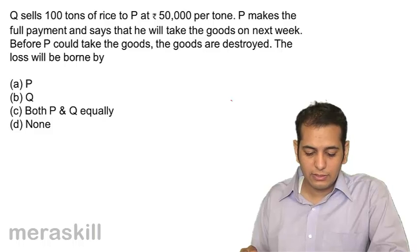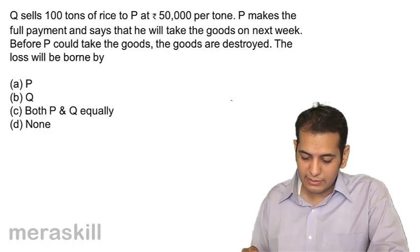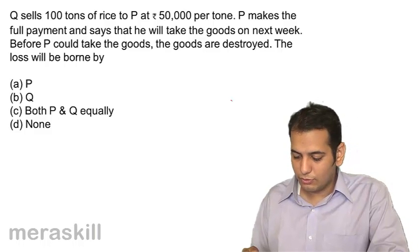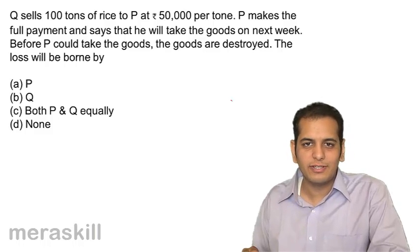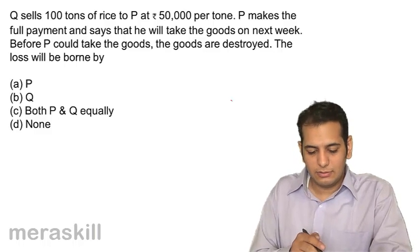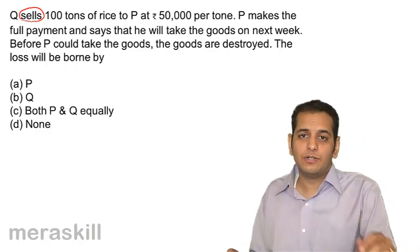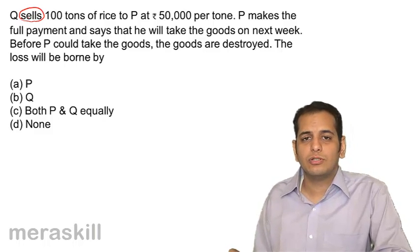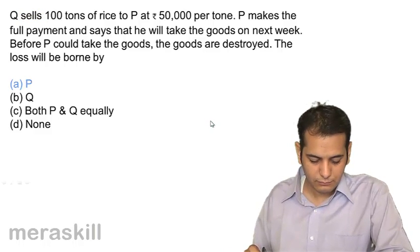Next: Q sells 100 tons of rice to P at 50,000 per ton. P makes full payment and says he will take the goods next week. Before P could take the goods, they are destroyed. The loss will be borne by P — because the word 'sells' means Q has already transferred ownership to P. P becomes the owner, risk follows ownership, so P bears the risk.